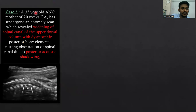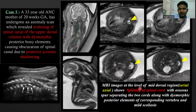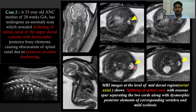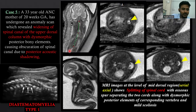Case five: a 33-year-old antenatal mother with 28 weeks of gestational age presenting for ultrasound. We can see widening of the spinal canal of the upper dorsal column with dysmorphic posterior bony elements, and there is obscuration of the spinal cord due to posterior cystic shadowing. This patient also underwent MRI, which showed at the level of the cervical region splitting of the spinal canal with an osseous spur, dysmorphic posterior elements, and mild scoliosis. We reported this case as diastematomyelia.